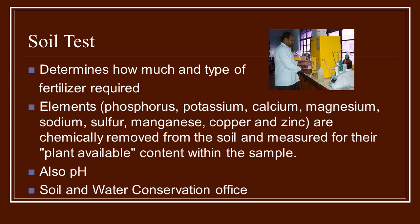One of the really important parts of finding out how healthy your soil is, is to conduct a soil test. This will help you determine how much and what type of fertilizer, if any, you will need. A soil test is going to test for the elements: phosphorus, potassium, calcium, magnesium, sodium, sulfur, manganese, copper, and zinc. These are chemically removed from the soil samples that you send in, then measured for plant availability. The test will also tell you the acidity or alkalinity of your soil — your pH. A great place to get a soil test is most soil and water conservation offices, often located near the extension offices in your county.